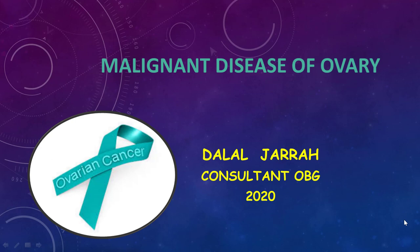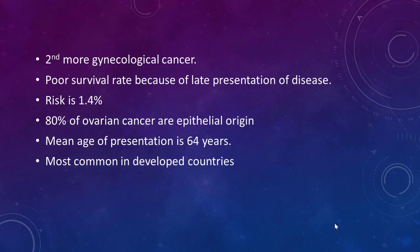This is the second lecture about ovarian disease, specifically malignant disease of the ovary. Ovarian malignancy is the second most common gynecological cancer after endometrial cancer, with poor survival rates due to late presentation — most are diagnosed at stage 3 or 4. The risk is about 1.4%, and 80% of ovarian cancers are of epithelial origin. The mean age of presentation is 64 years old, and it is most common in developed countries.